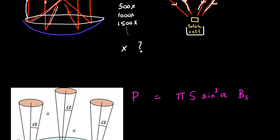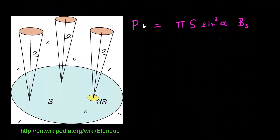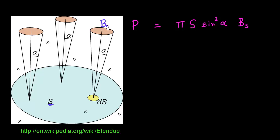The first thing I'll do is consider that I have this receptor over here, which has a surface area of S. So how much power of sunlight can be made incident on this receptor? I'll relate it to the brightness of my source, which is the sun — denoted by B with a subscript S, standing for source or sun.